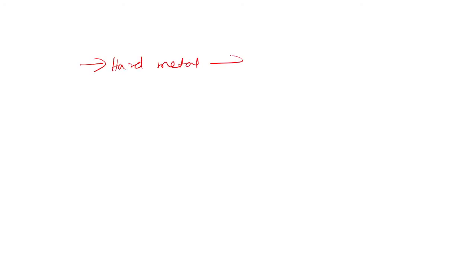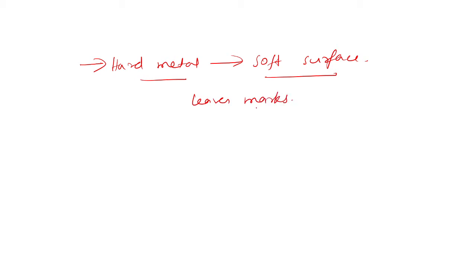A tool mark — a tool is a hard metal that operates on a soft surface. When this hard metal operates on a soft surface, they leave a mark. Those marks are called tool marks. Tool marks can be any artifact left using a tool on any material — if this tool is acting on any material, they leave some marks, and that artifact is called tool marks.